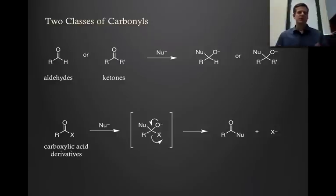There's some exceptions to that depending on what the nucleophile might be. But in general, for example, if you add a Grignard to an aldehyde or ketone, you go to this intermediate and that's it. That's the end of the story.